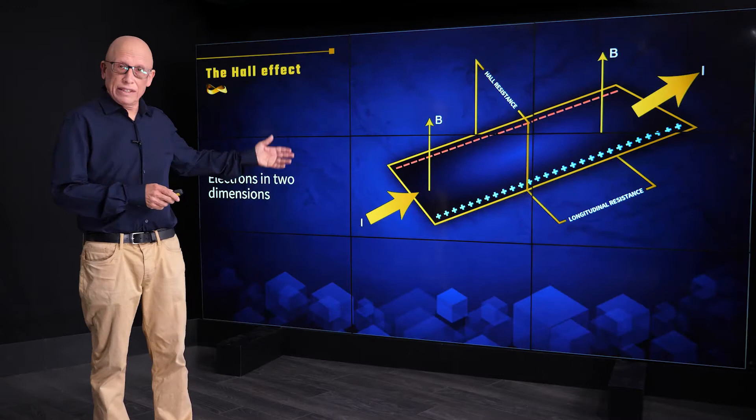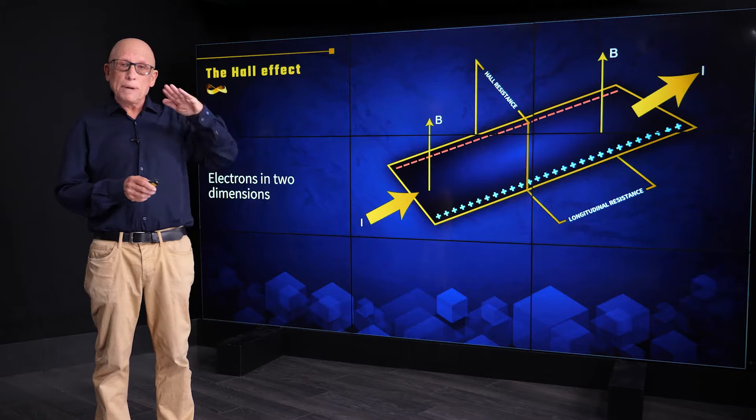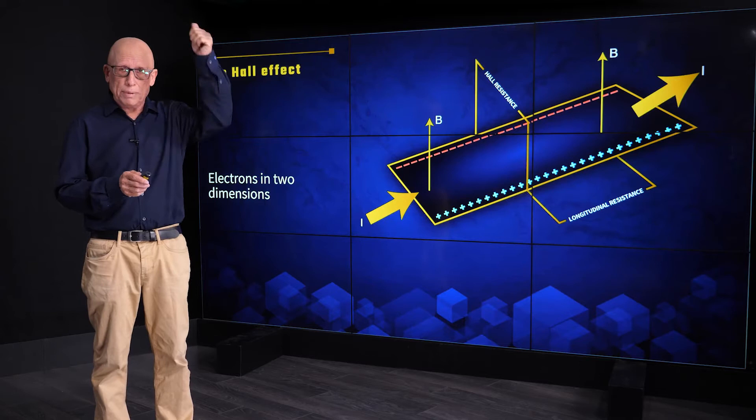So let's start from the Hall effect. In the Hall effect, in the context we're talking about, electrons flow in two dimensions. And the plane in which they flow is subjected to a magnetic field perpendicular to the plane.